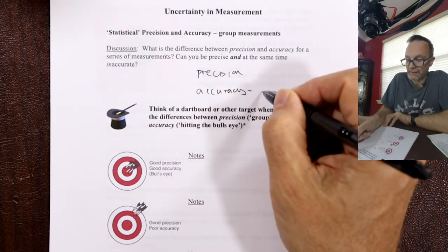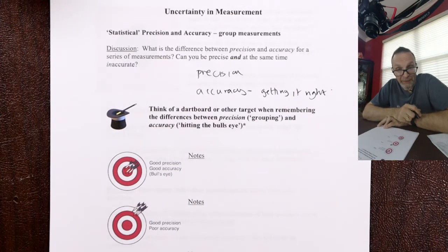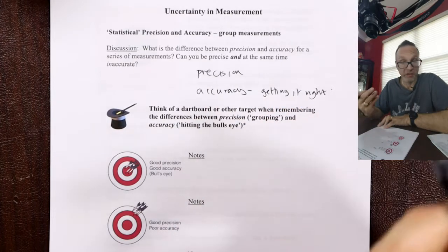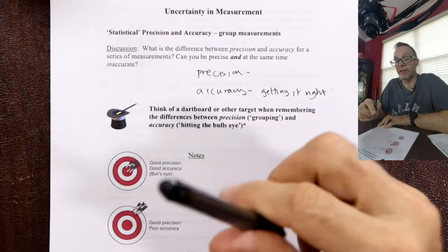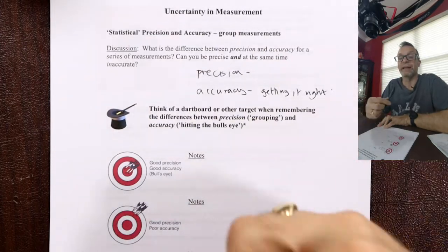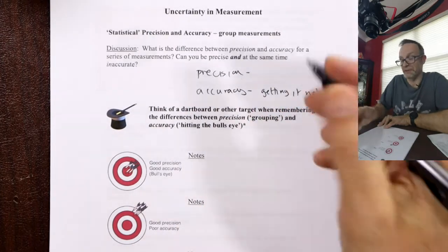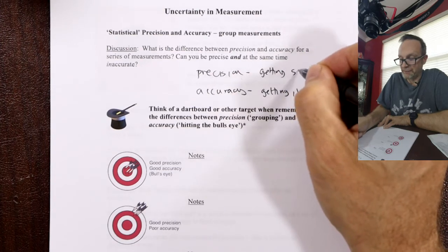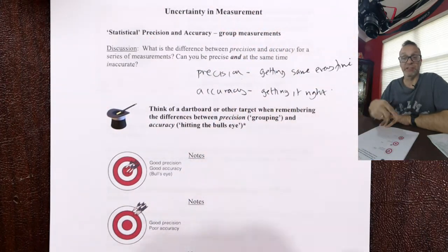Accuracy is all about getting it right. If my wife asks for a pound of sugar and I bring back a pound of sugar, that's accurate. If I bring back two pounds, it's inaccurate. Accuracy is getting it right — a correct measurement. Precision is getting it the same every time. A Swiss watch is very precise — it measures each second the same way. Precision is reproducibility.